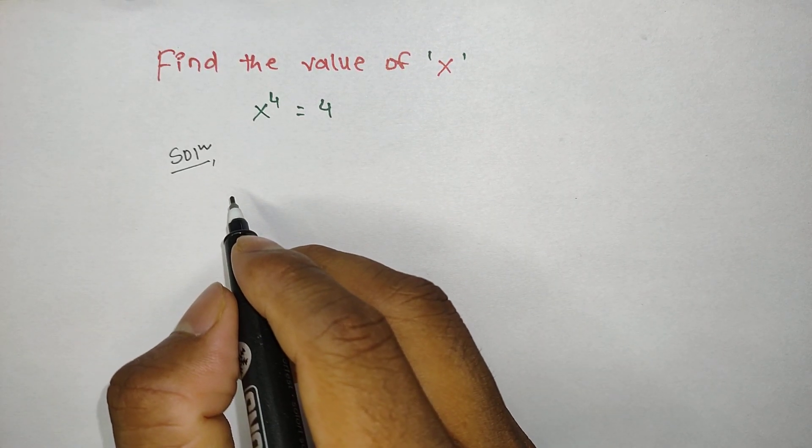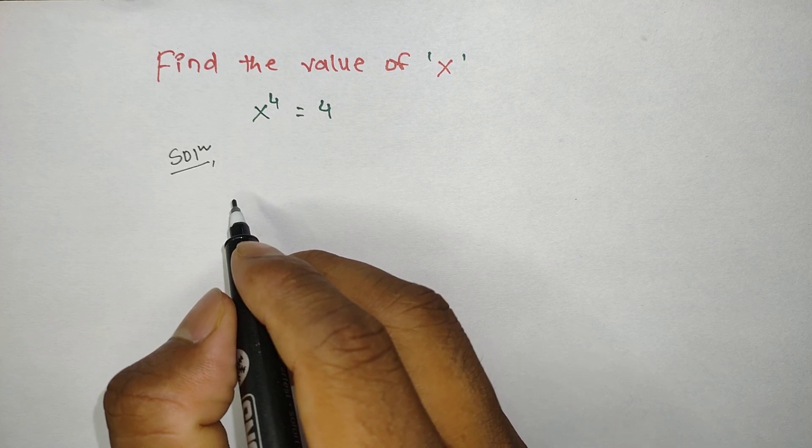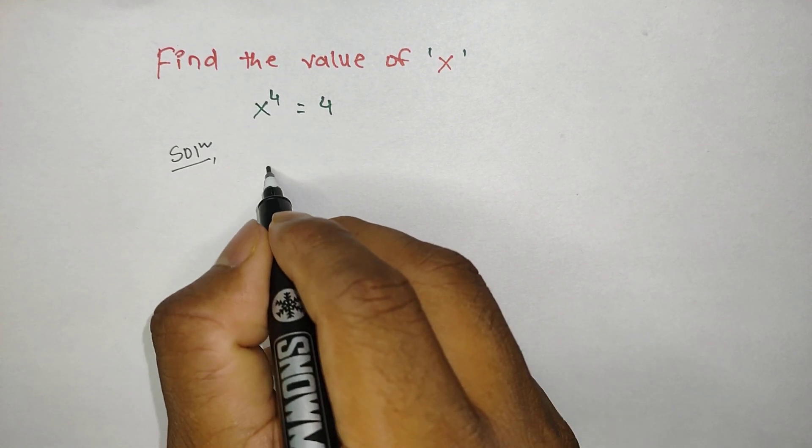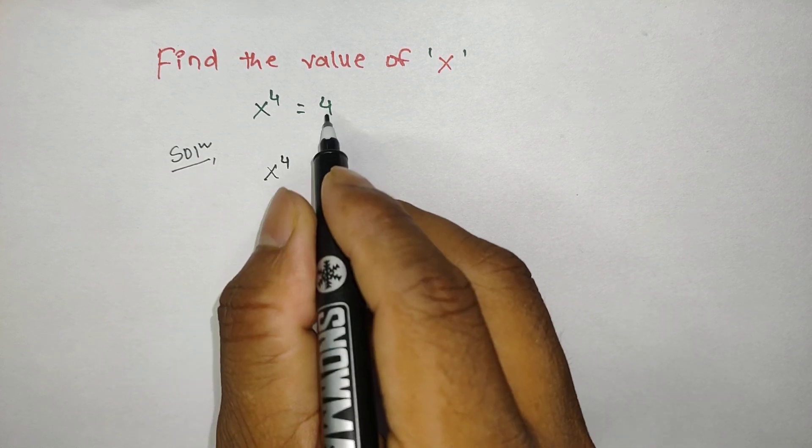Before I start the solution part, I would like to request you please do like, share and subscribe. So here we have the given equation, x power 4. We can move this 4 to the left hand side, so it is x power 4 minus 4 equals zero.